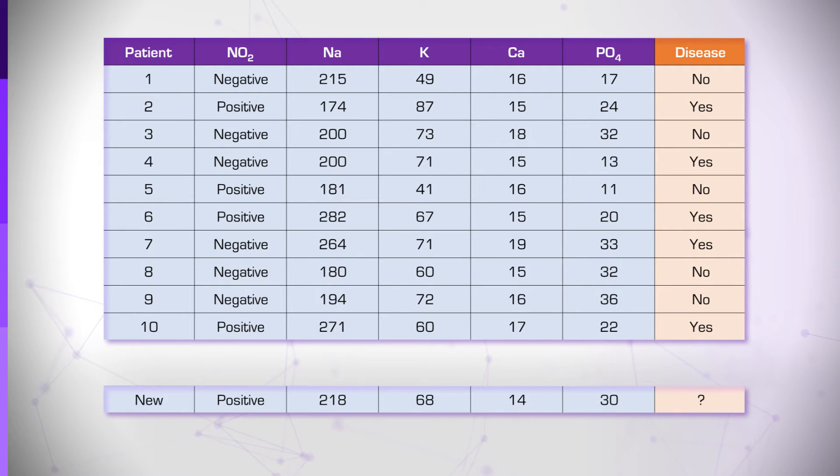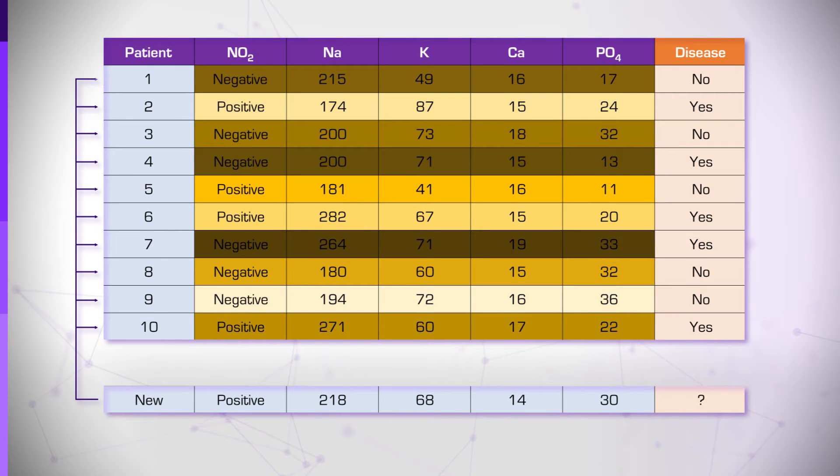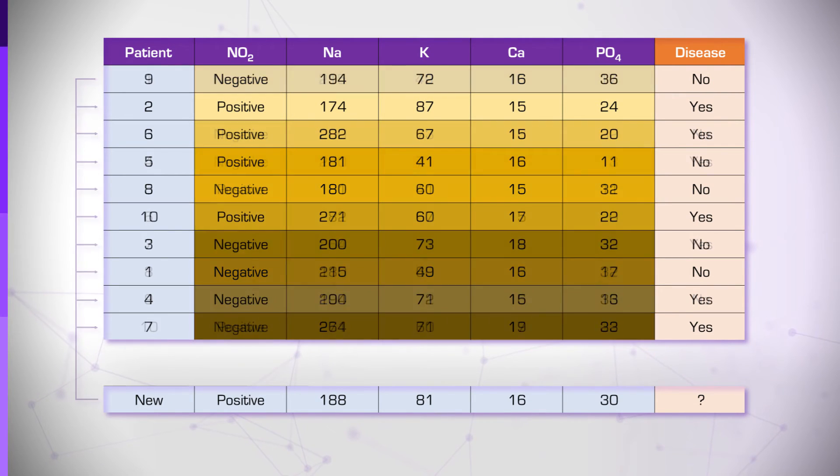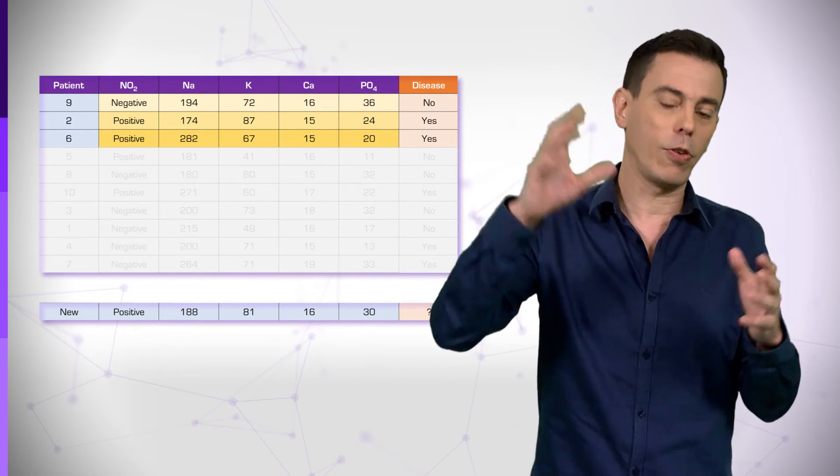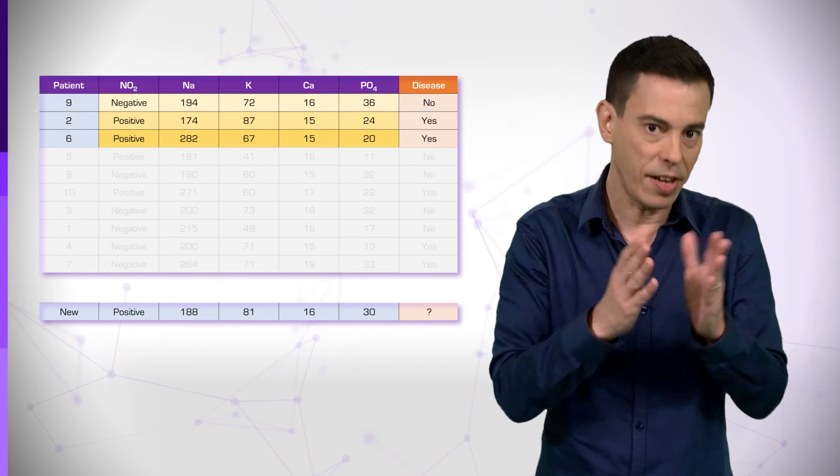Now, we compute the distance between the new patient and the 10 we have in our database. We sort the patients according to the distance, and take the k patients at the top of the sorted list, our k nearest neighbors.